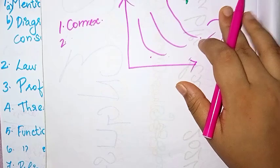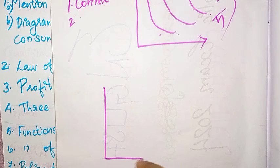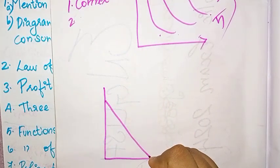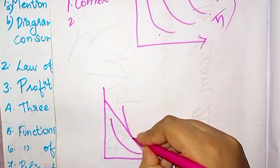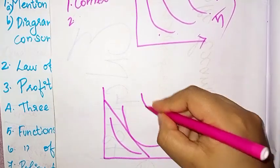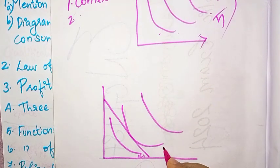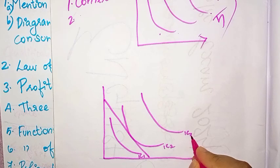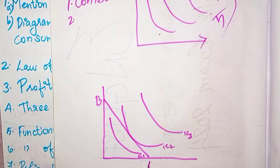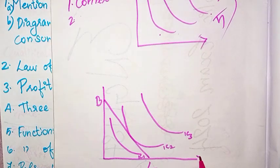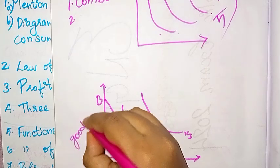You have to study the diagram — it is very important for the exam. Now look at the diagram. Let's start here. We will draw a budget line, then an indifference curve, then once it comes to the profile. This is indifference curve 1, indifference curve 2, and indifference curve 3, and we have B and L — the budget line.